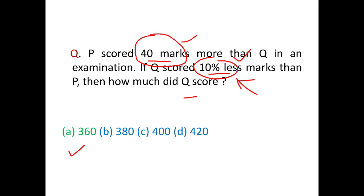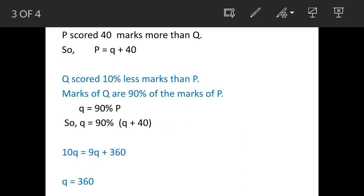We will see the answer. Now, it is given P scored 40 marks more. So P will be equal to Q plus 40, and marks of Q are small q. Q scored 10 percent less marks, so marks of Q are 90 percent of P.